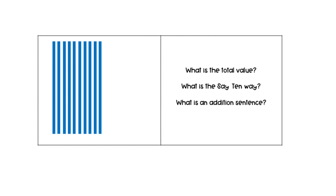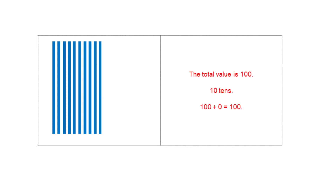What is the total value of this picture? What is the say-ten way? What is an addition sentence for this picture? Let's count the quick tens: 1, 2, 3, 4, 5, 6, 7, 8, 9, 10. So the total value is 100. There are 10 tens and 0 ones, so we could say that 100 plus 0 equals 100.